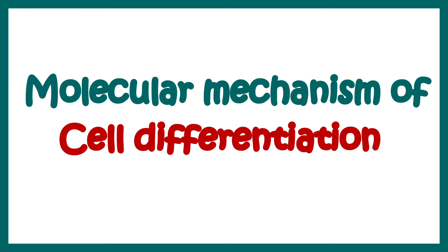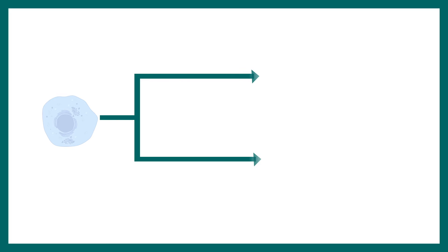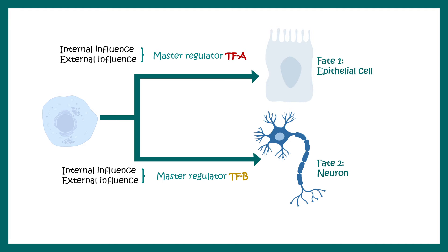It is very complicated and diverse, with several mechanisms involved in cell differentiation. In strategy one, a cell has two alternative fates — for example, becoming an epithelial cell or a neuron. There could be master regulator transcription factor A driving fate toward the epithelial cell, and master regulator transcription factor B driving fate toward a neuron. Both master regulators are driven by internal and external influences.